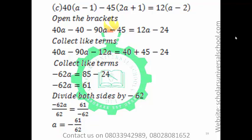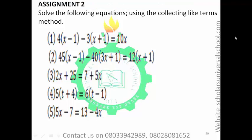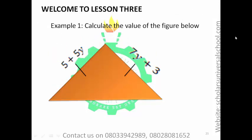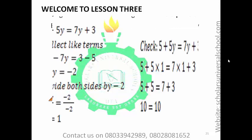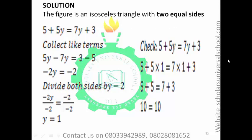This is your second assignment — follow the previous examples step by step and you will surely find the way. Let's look at lesson 3: calculate the value of the figure below. This is an example of an isosceles triangle. For an isosceles triangle, the two opposite sides are equal — this side is equal to this side — and that is how you will perform the mathematical solution.